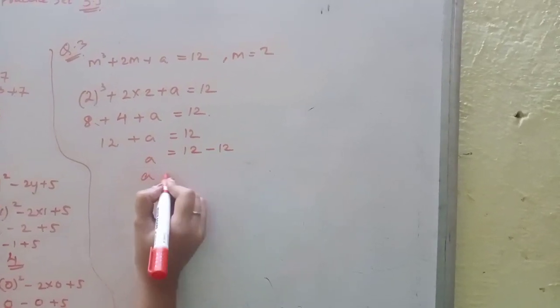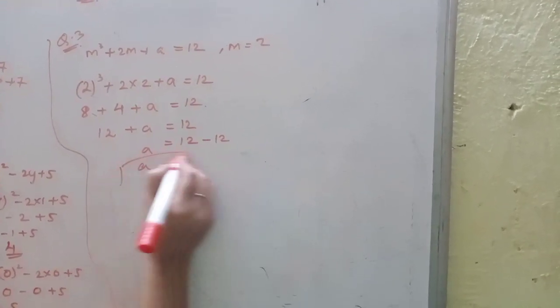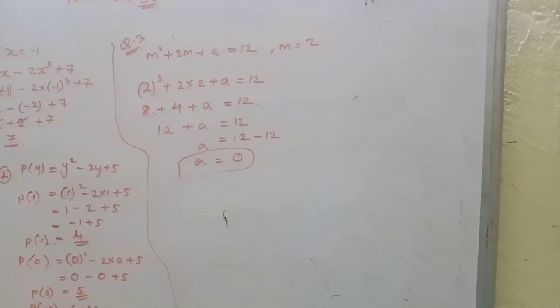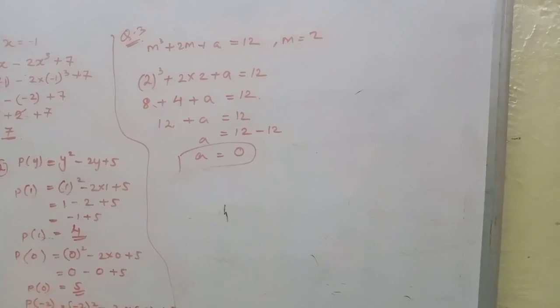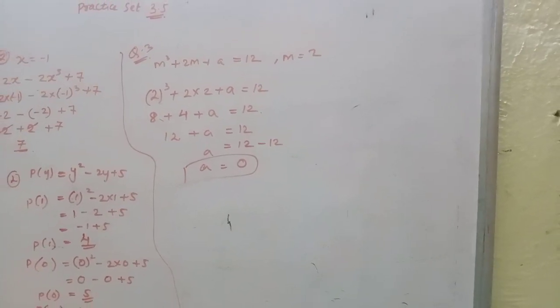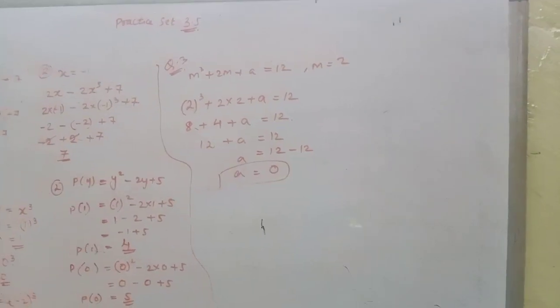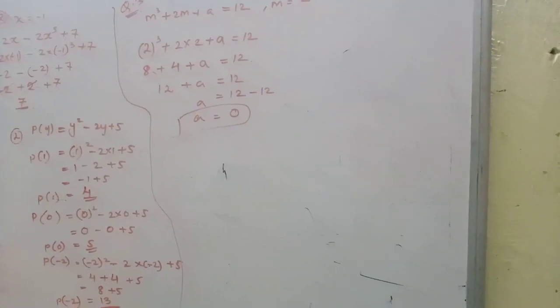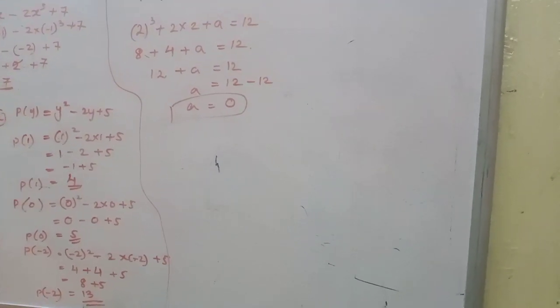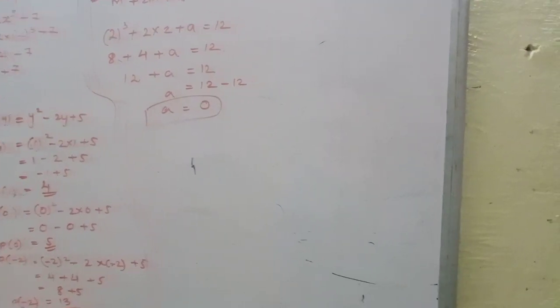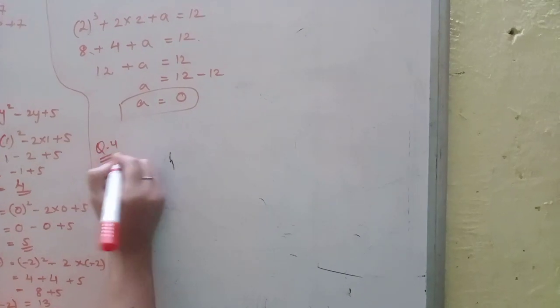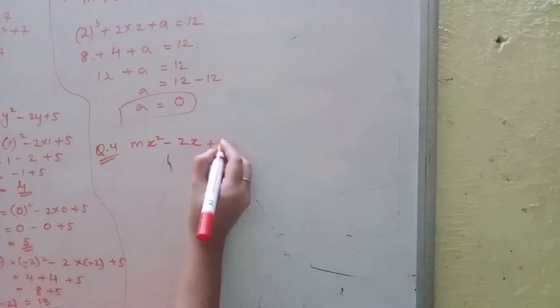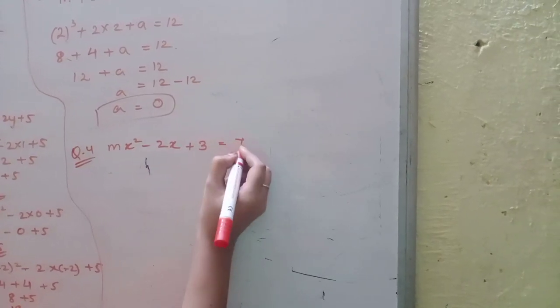Fourth question: For the polynomial mx² - 2x + 3, if P(-1) = 7, find m. X ke place pe we have to put -1.